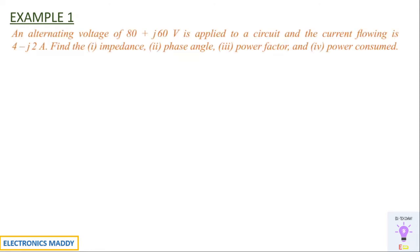Our first example: an alternating voltage of (80 + j60) volt is applied to a circuit and the current flowing is (4 − j2) amps. Find the impedance, phase angle, power factor, and power consumed. They've not indicated whether it is series RL or RC, but since the current is (4 − j2), converting to polar form shows that I is lagging behind V — confirming it is a series RL circuit.